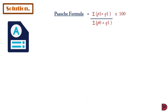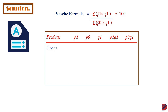The second one is the Paasche price index. Its formula is the summation of the selected price multiplied by the selected quantity, all divided by the summation of the base price multiplied by the selected quantity, all multiplied by 100. For cocoa, the selected price is $5.50, the base price is $5.00, and the selected quantity is 30. Multiplying the selected price by the selected quantity gives $165.00.